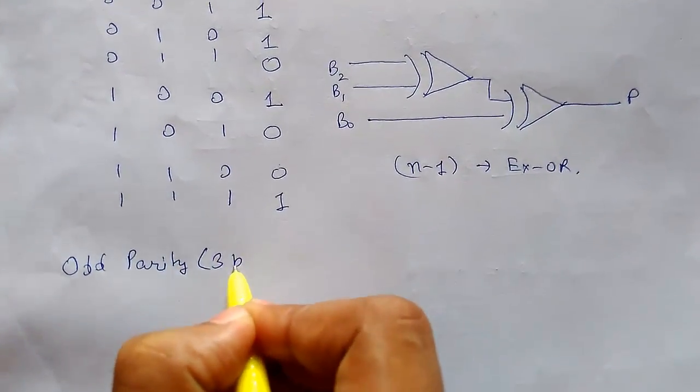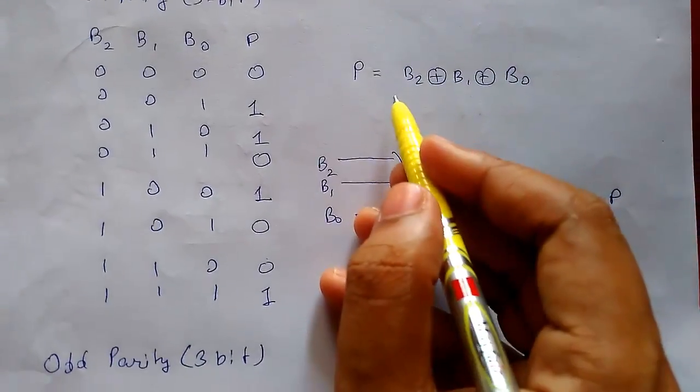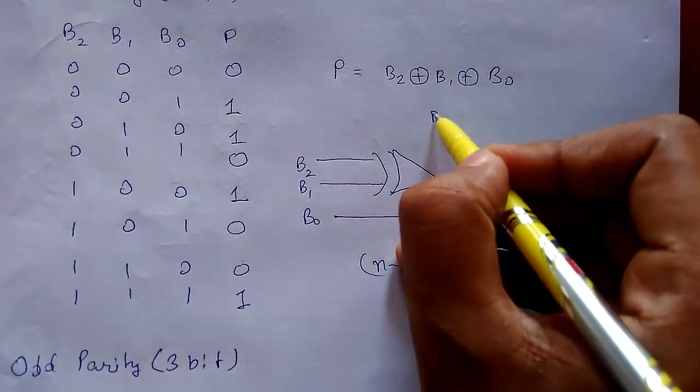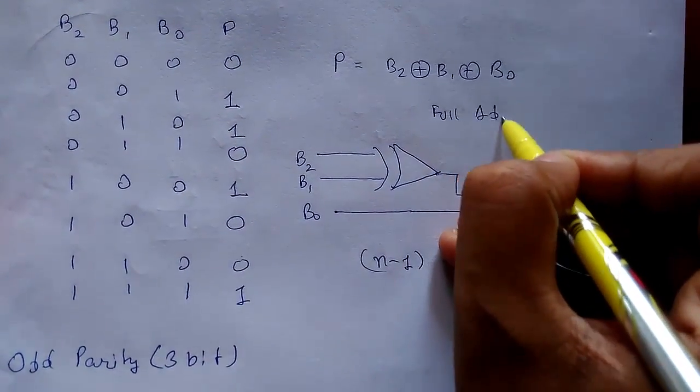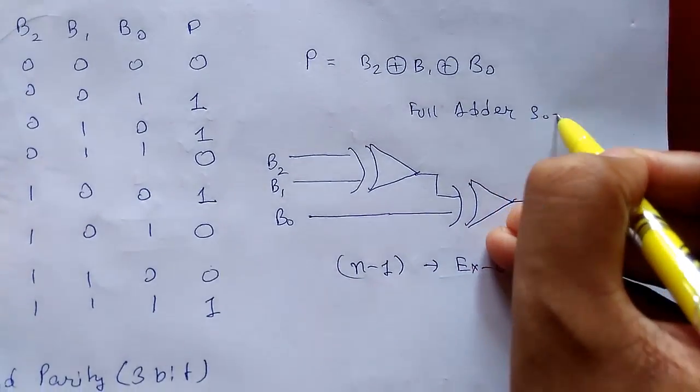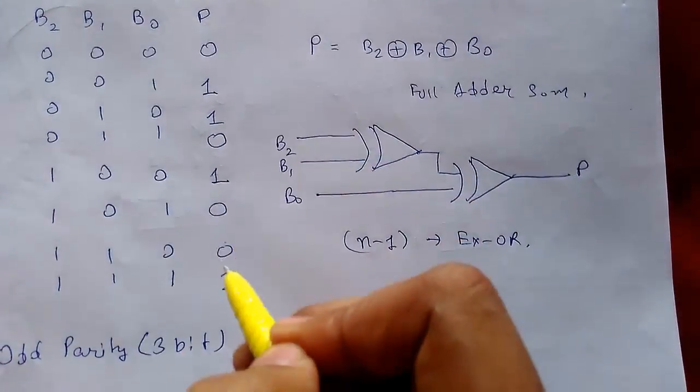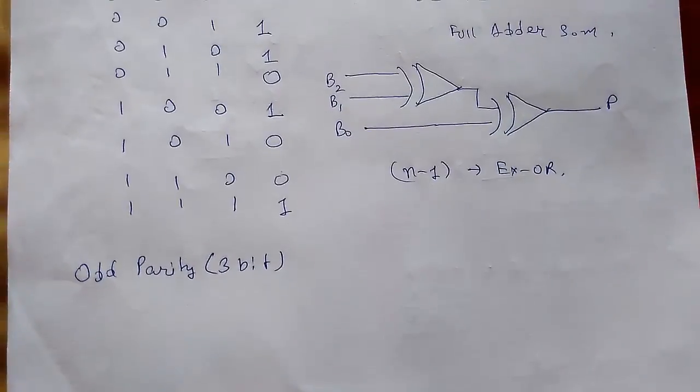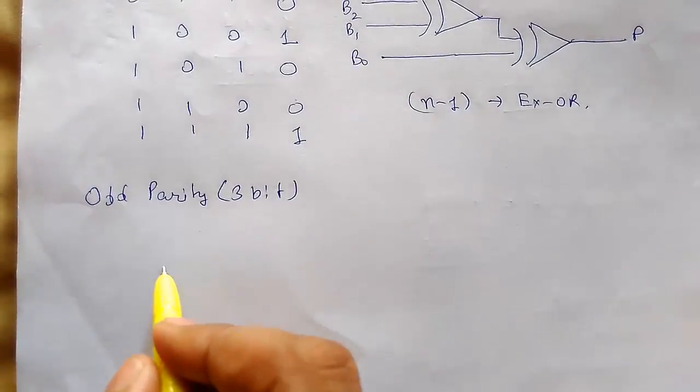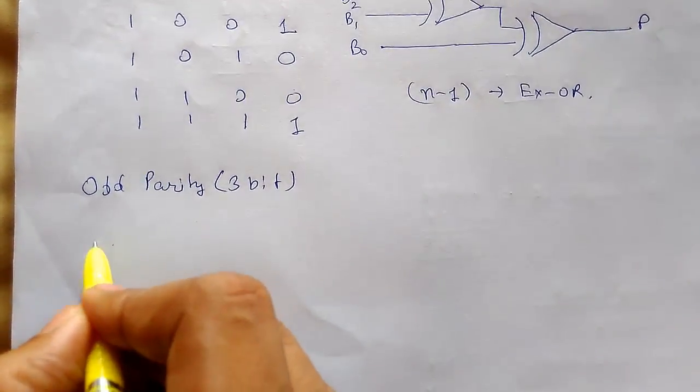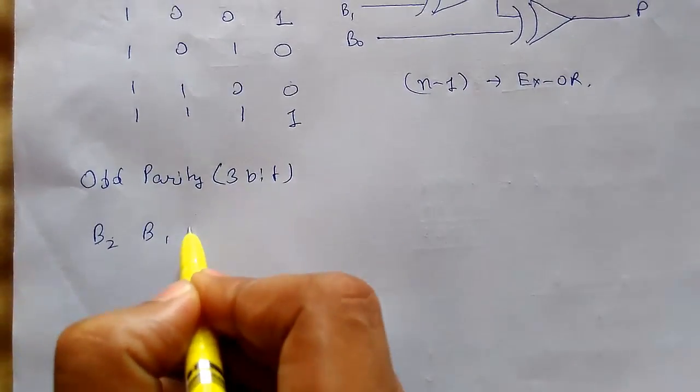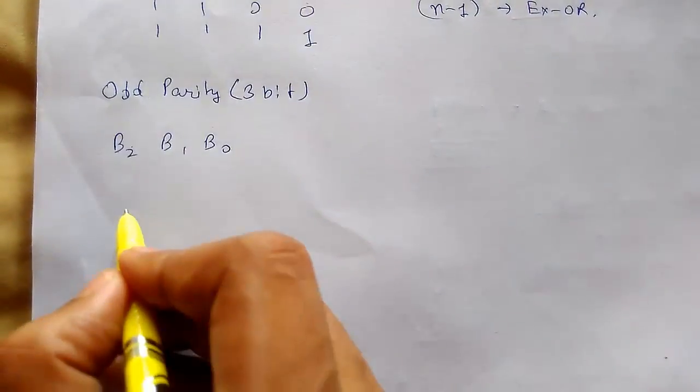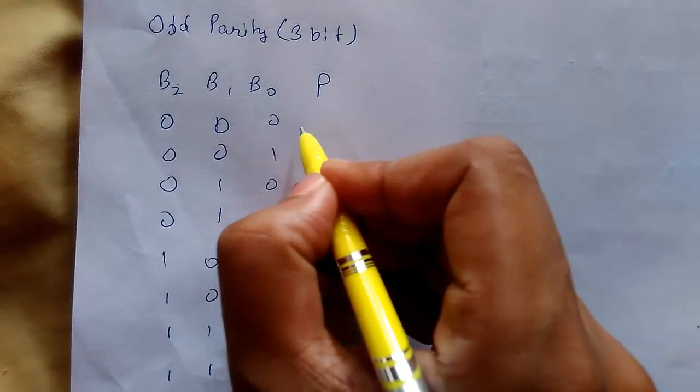For odd parity 3-bit, this function is the sum of a full adder. Now for odd parity, we'll make the truth table and fill in the parity bits.